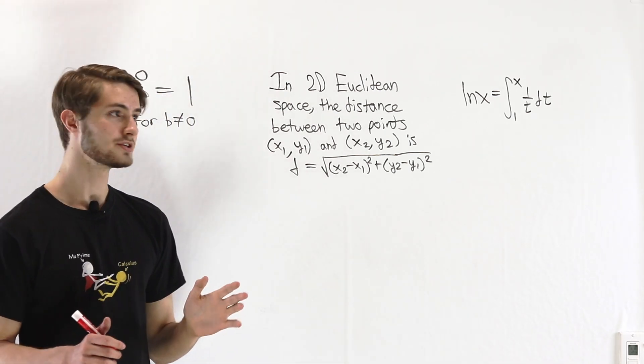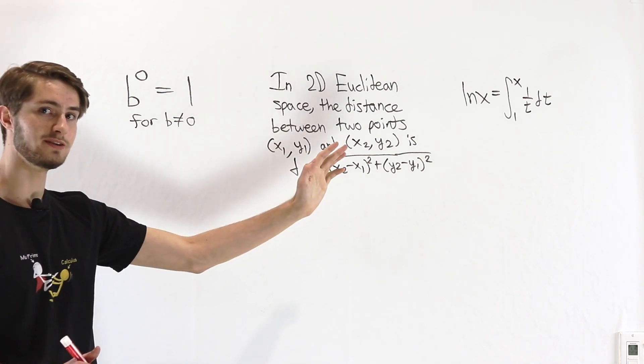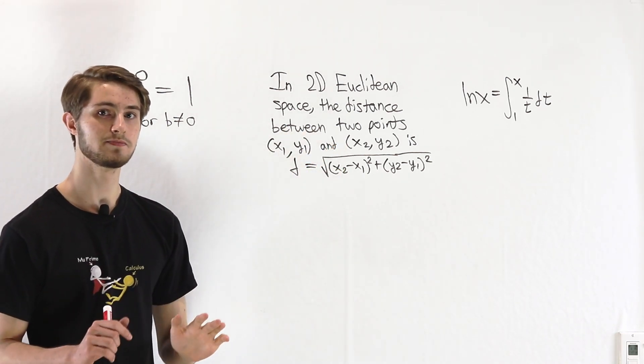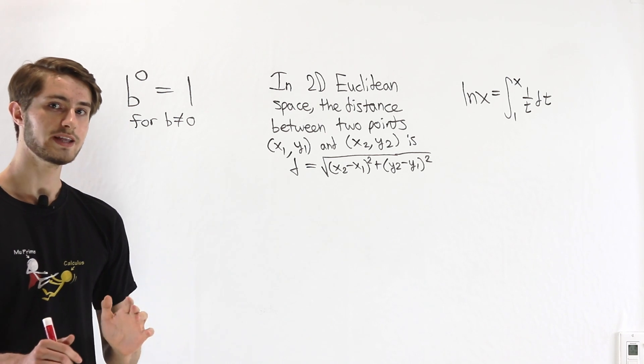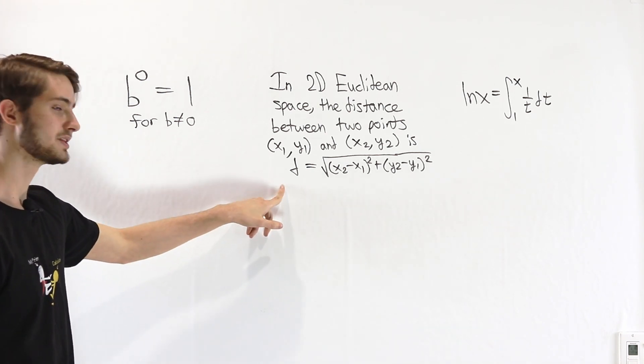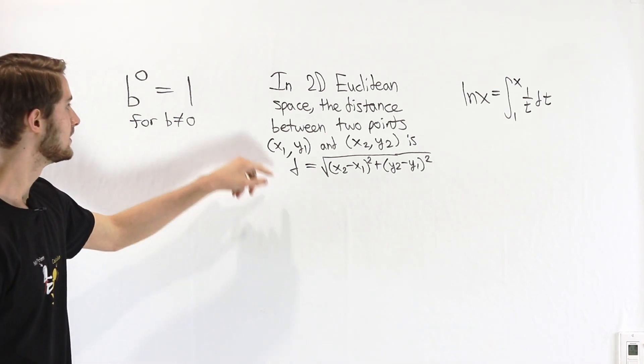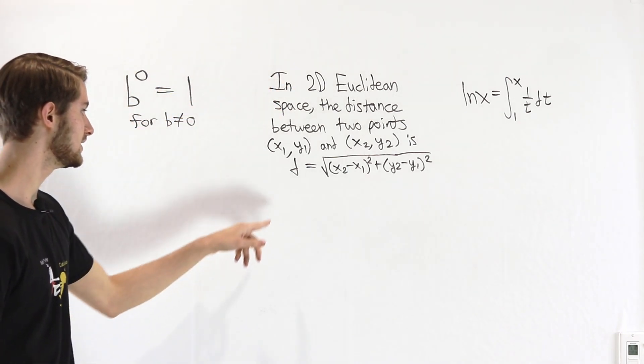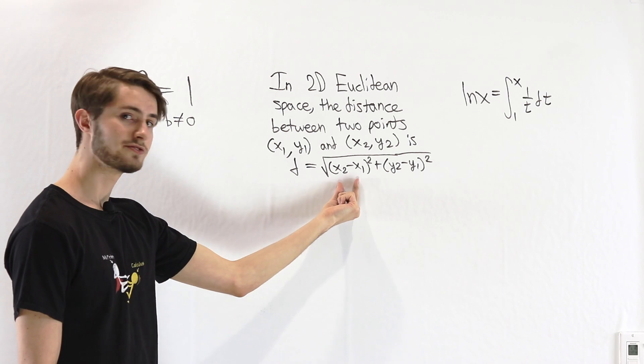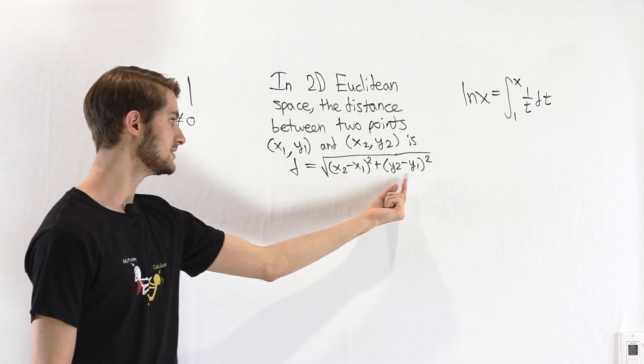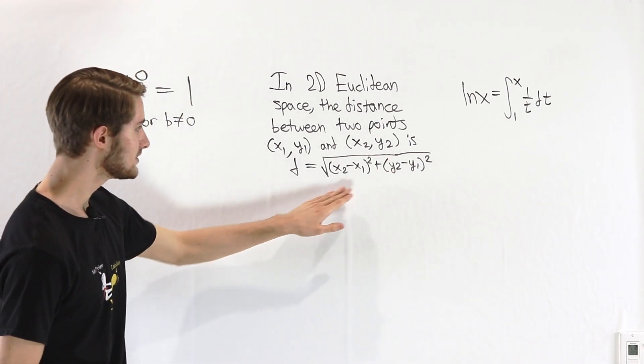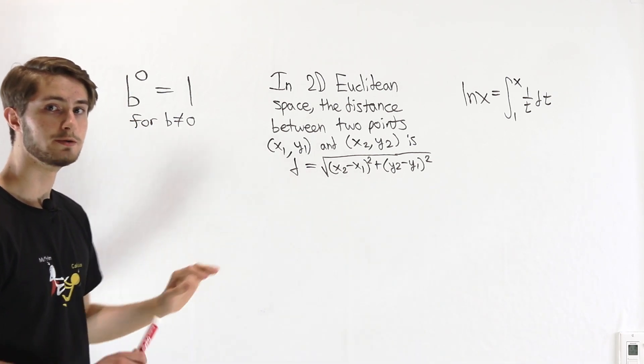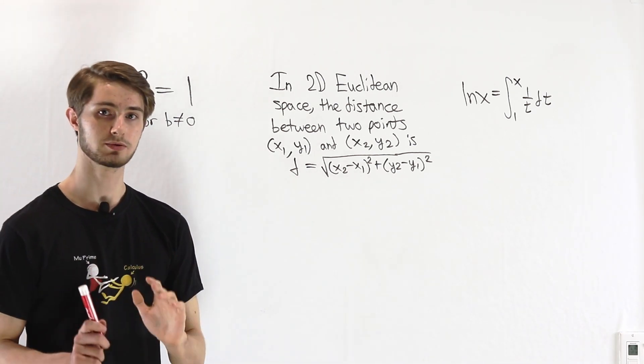The correct answer for each of these three statements is it depends. In order to understand why that's true, we're going to start with this statement in the middle. That in 2D Euclidean space, the distance between two points is the square root of the difference in x squared plus the difference in y squared. When you see this expression here, you might think that it's something we can prove.